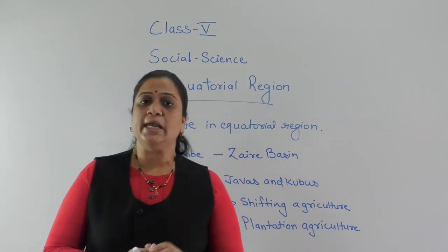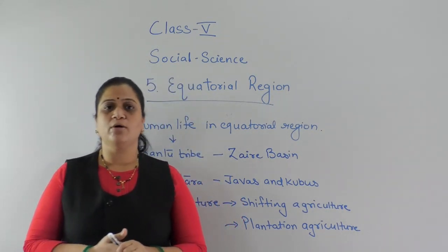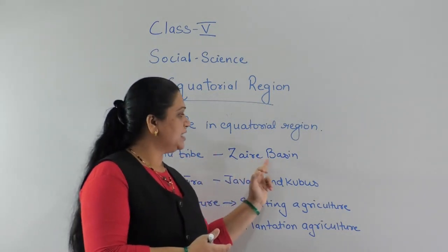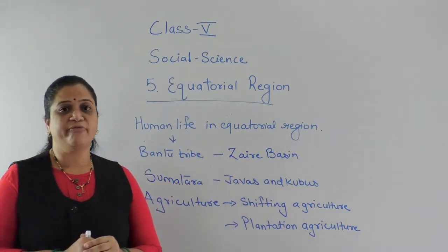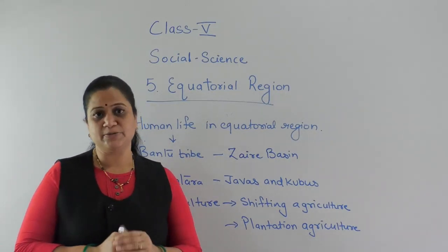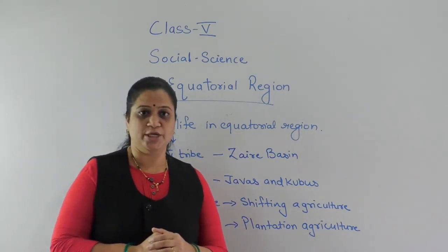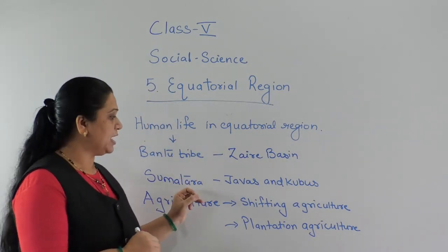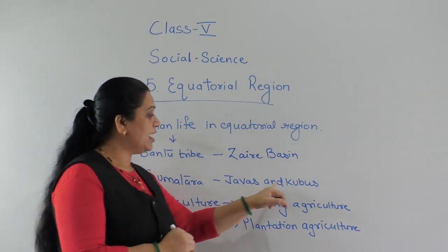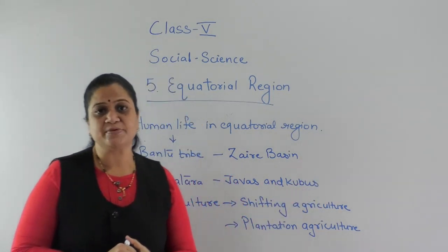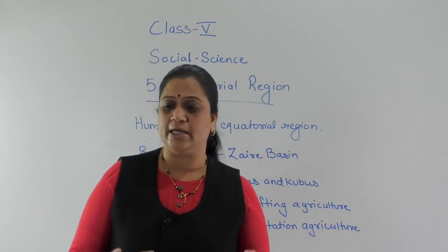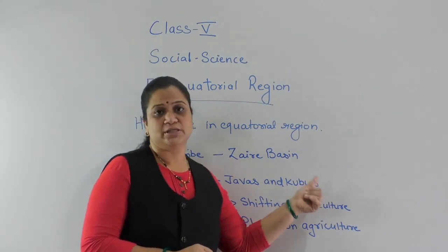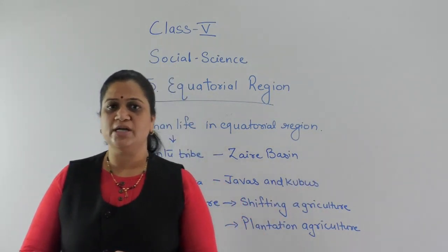The tribes — the people who live in the equatorial forest region — some of the tribes are the Bantu tribes, found in the Congo Basin. The Indonesian island of Sumatra also has the Java and Kubus tribes. These two tribes are the inhabitants of the equatorial forest region. So Bantu tribe and Java and Kubus are the tribes which are found in the equatorial region.